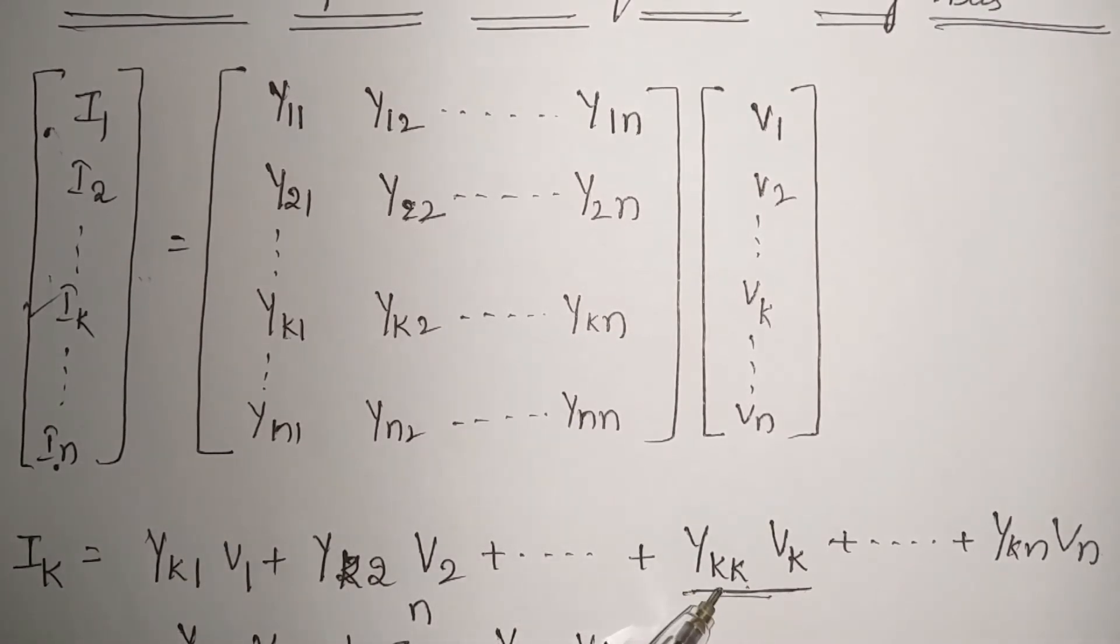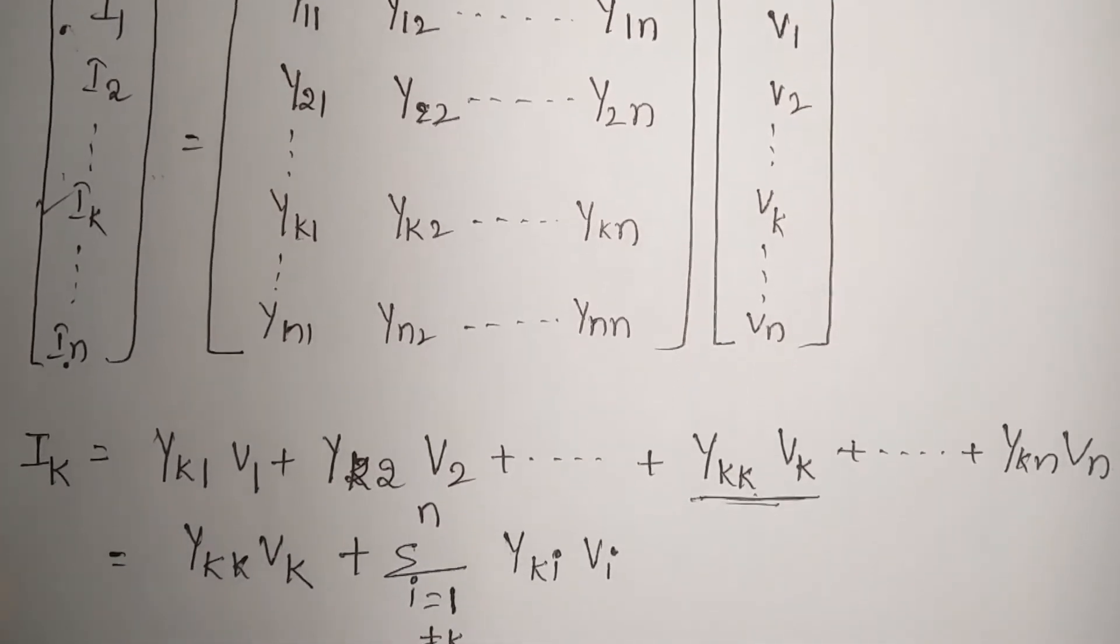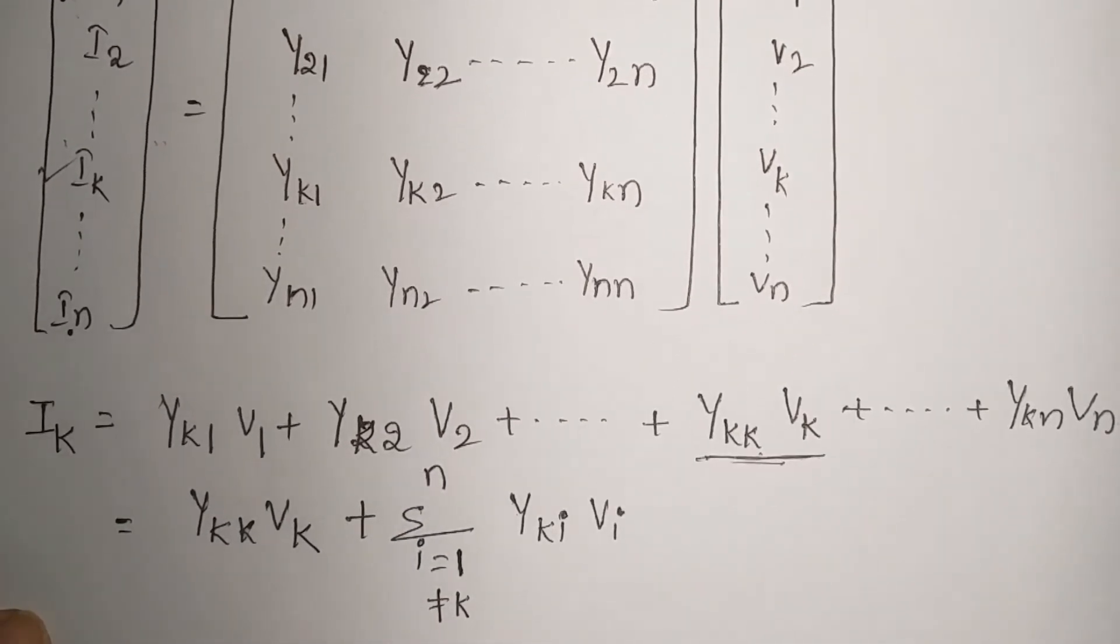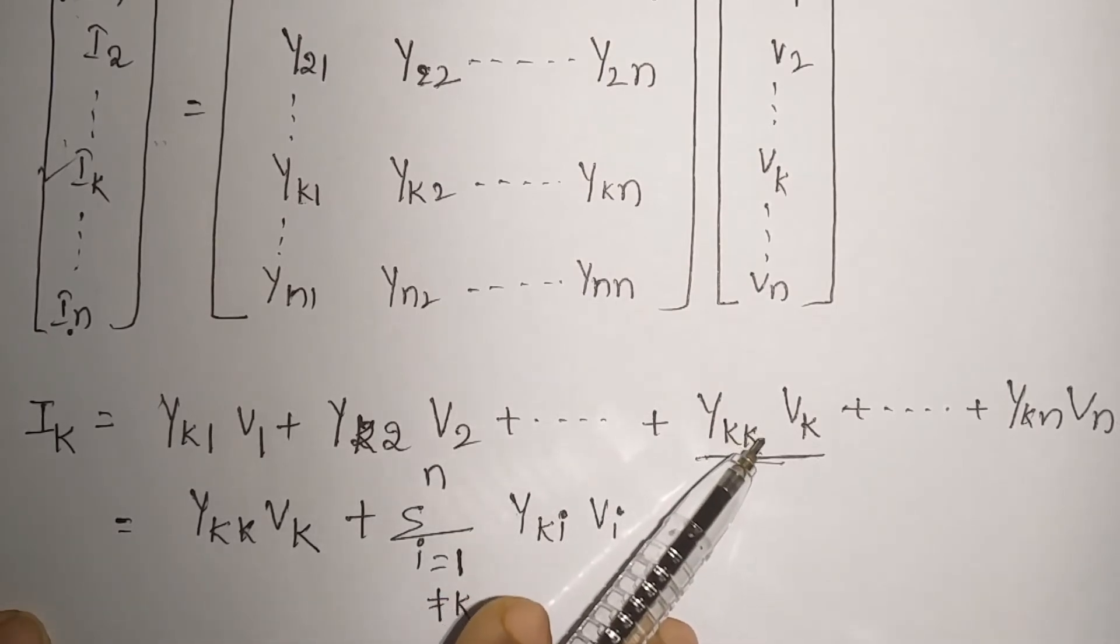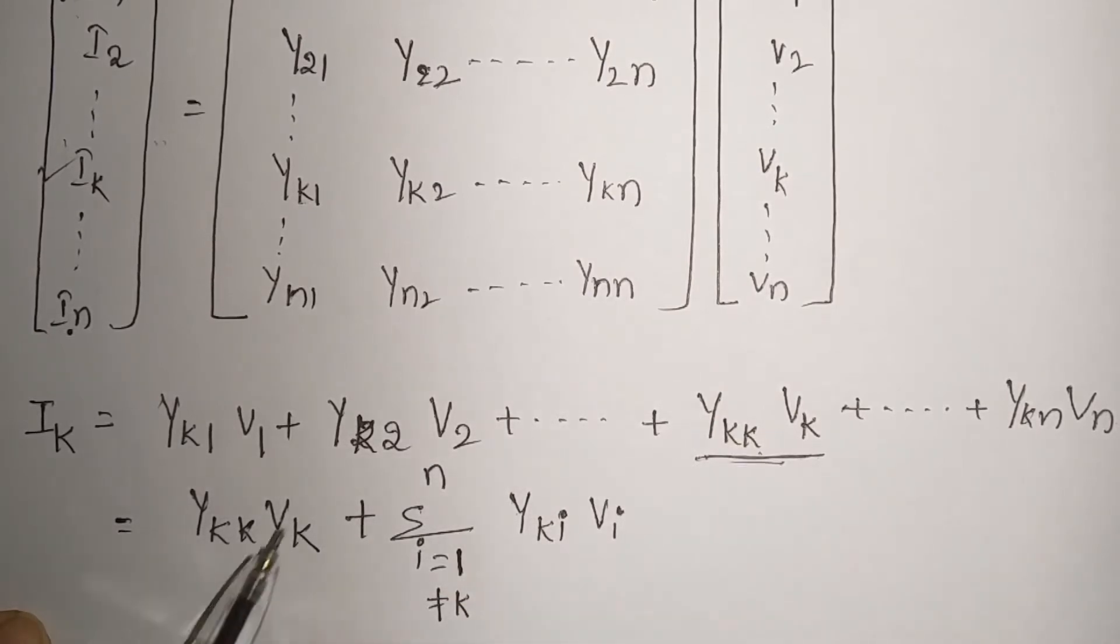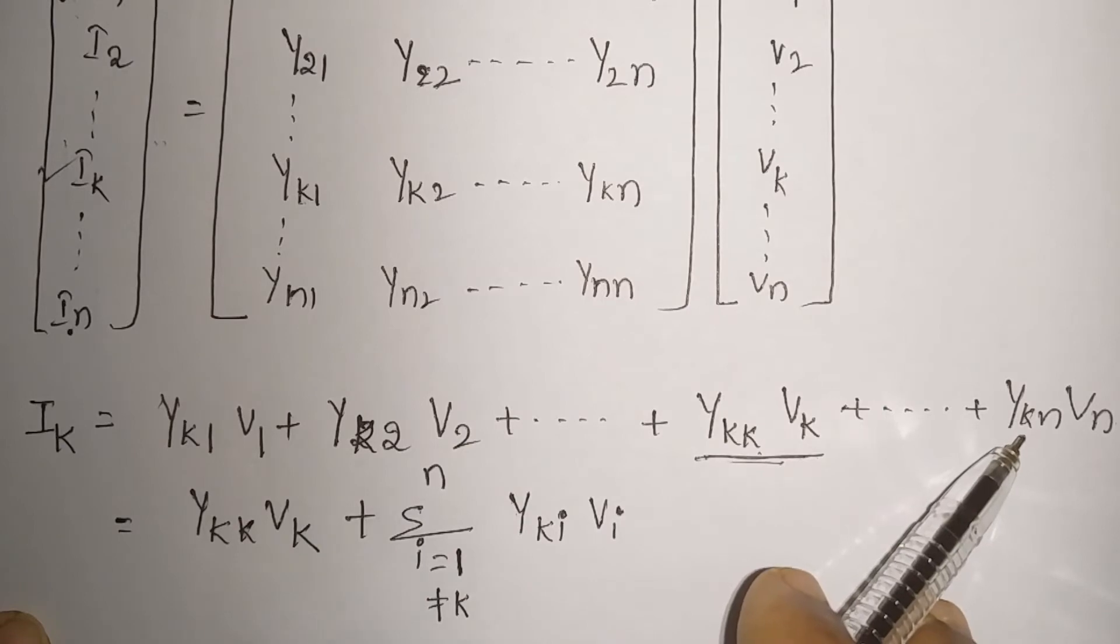If we do so, the equation will seem like this. So we picked out this kth element. Whatever the rest of the portion may be, it can be written like this. See the pattern: Yk1, Yk2, and so on Ykn.